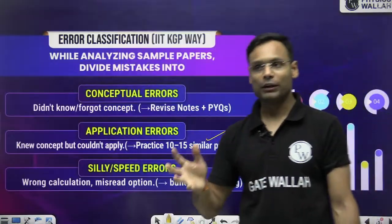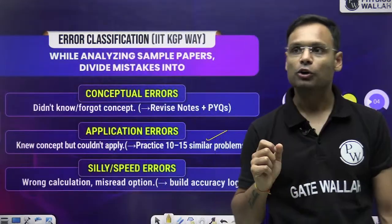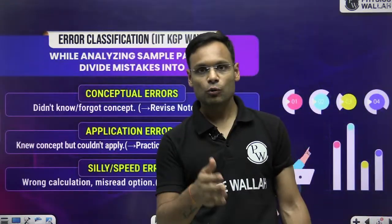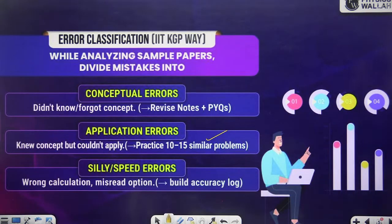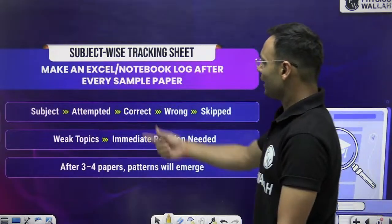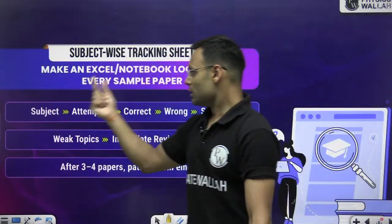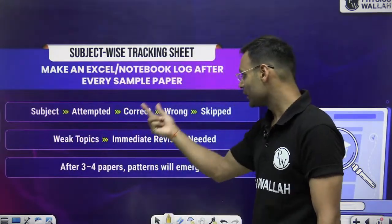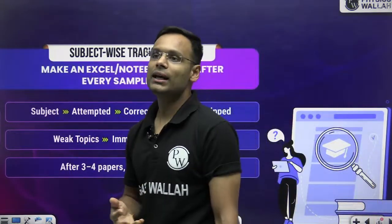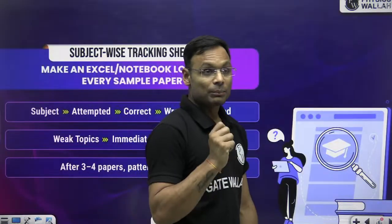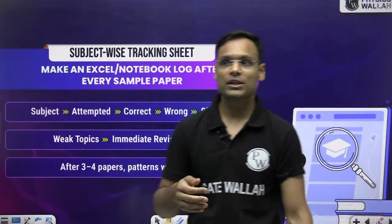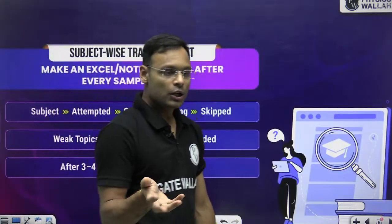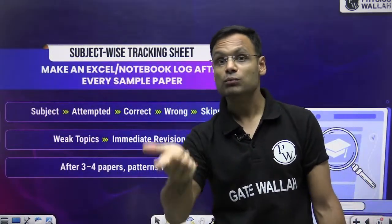If you encounter an unusual or different variety of question, collect all such questions in a small document. Before any test on that course or subject, review that document once to revise those unusual question types. Additionally, maintain a subject-wise tracking sheet — an Excel sheet or notebook — recording after every sample paper: how many questions you attempted per subject, how many were correct, wrong, and skipped. This tells you which subjects you have a strong grip on and which to focus on more.